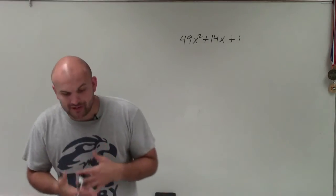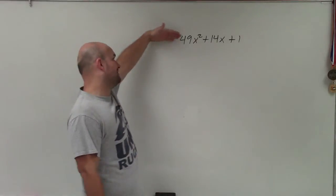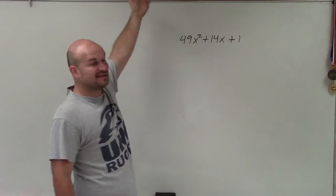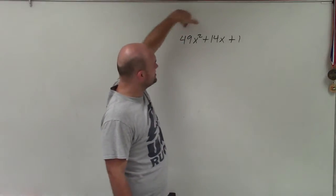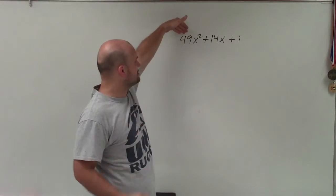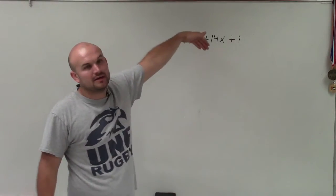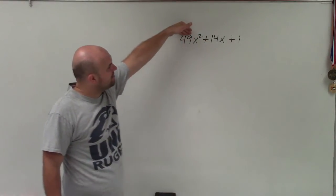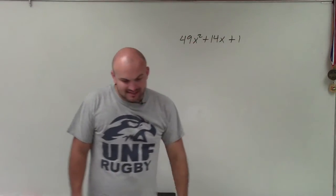And automatically, when I'm looking at this, I see you could use the AC method. But the AC method is actually not that bad, because it's 49 times 1. So really, it's kind of like when a is equal to 1. It's just that our factors are going to be from up at a, rather than at c.